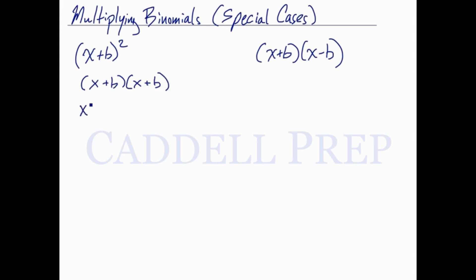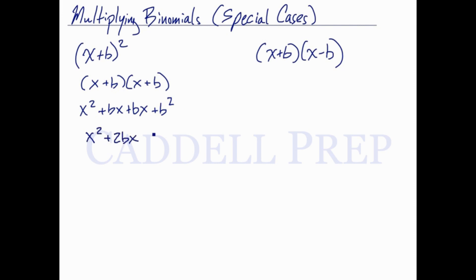So we get x times x is x squared, x times b is bx, b times x is bx again, and then b times b is b squared. So we end up with x squared plus 2bx plus b squared.